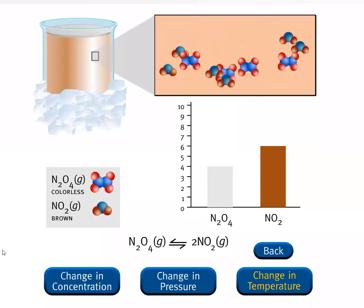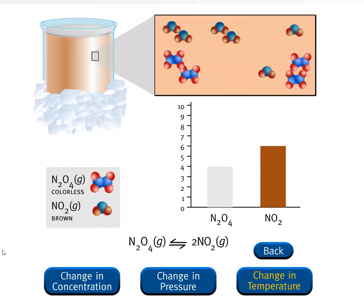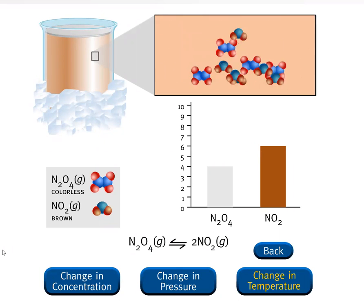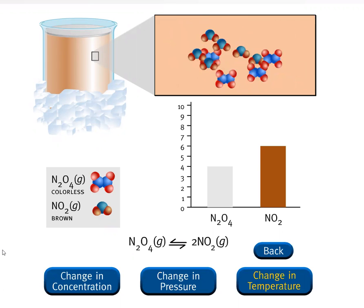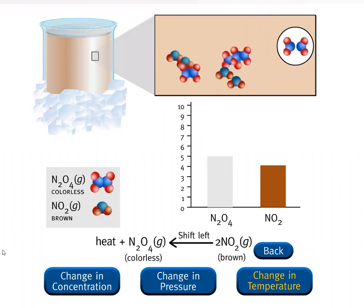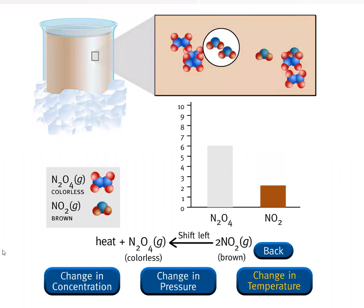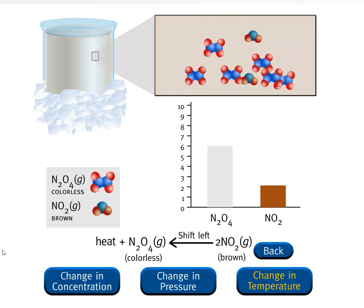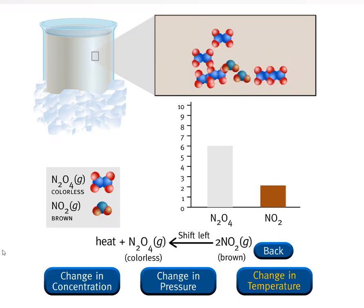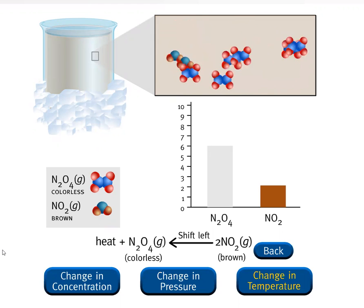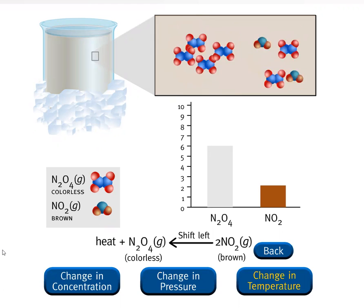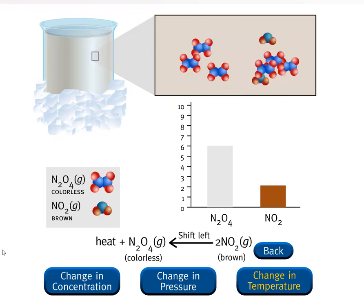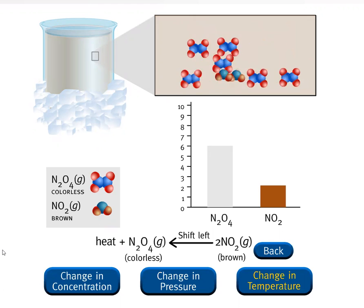You have decreased the temperature of the system by removing heat. This reaction is endothermic, so you can think of heat as a reactant — heat must be supplied to the reacting mixture. The system can replace some of the heat that was removed by shifting to the left, producing more N₂O₄ and decreasing NO₂, as you can see in the microscopic view. As more N₂O₄, a colorless gas, is produced, the color of the equilibrium mixture becomes lighter, as you can see in the macroscopic view.